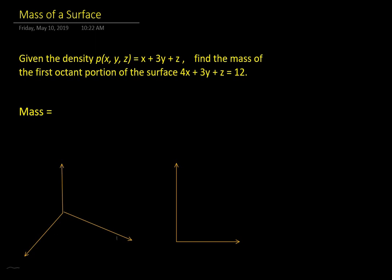Here's our next problem to work on. We're nearing the end of the Calculus 3 course, multivariable calculus, and we're going to take a look at this problem about the mass of a surface. So we have a density function ρ(x, y, z), so that means we know we're in three dimensions, is x plus 3y plus z.